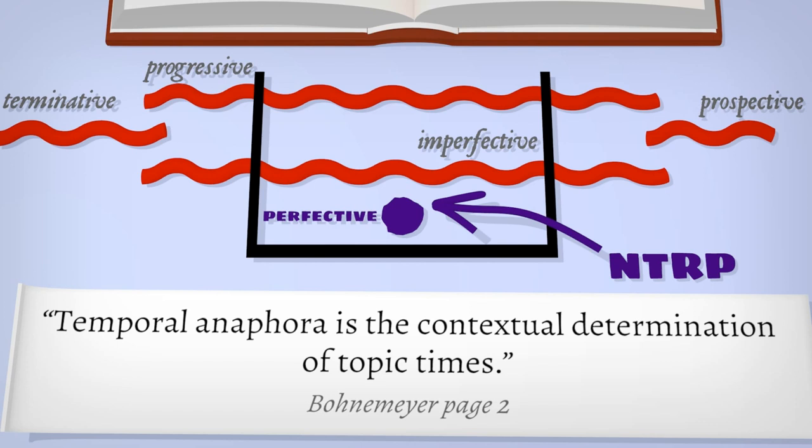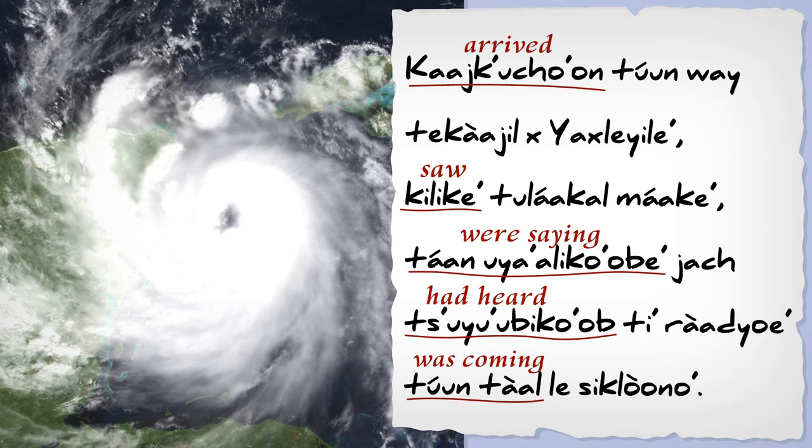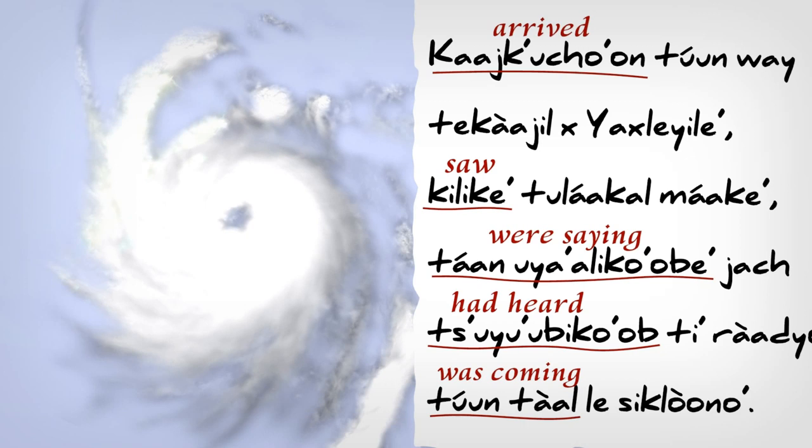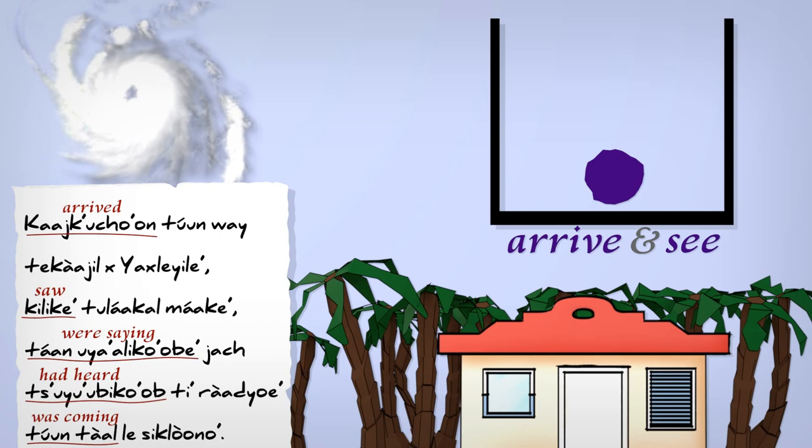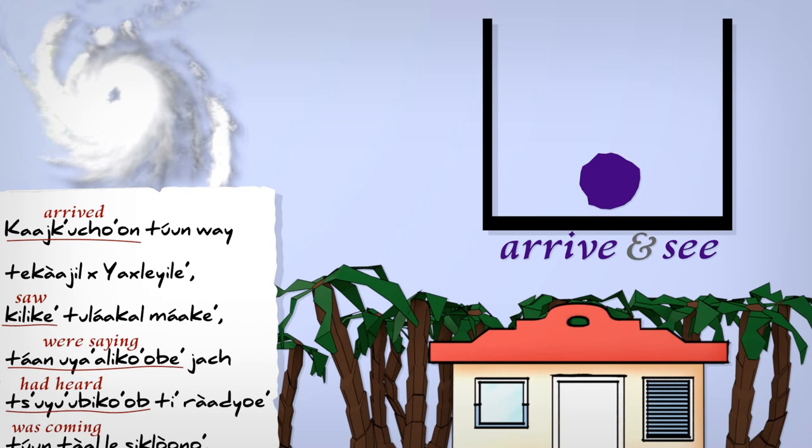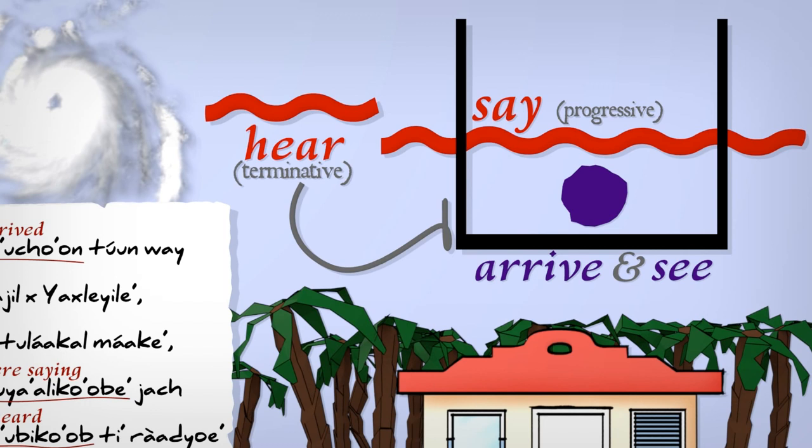With those hard-won temporal tools in mind, look back once more at that hurricane. Can we make sense of it now? First, there's a perfective plus imperfective. Arrive and see. This is actually a narrative idiom in Maya, and it's heard as perfective. It sets a reference point. The three sentences that follow bind to that reference point. It's now their topic time. People saying is progressive, ongoing in that topic time. Hearing is one of those terminatives that happened at a previous time where this topic is in its post state. The cyclone coming is in progress too.